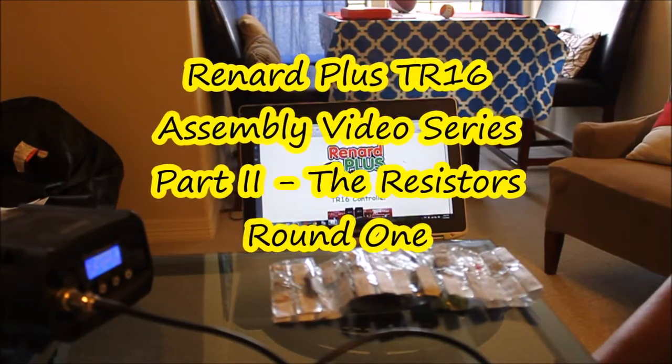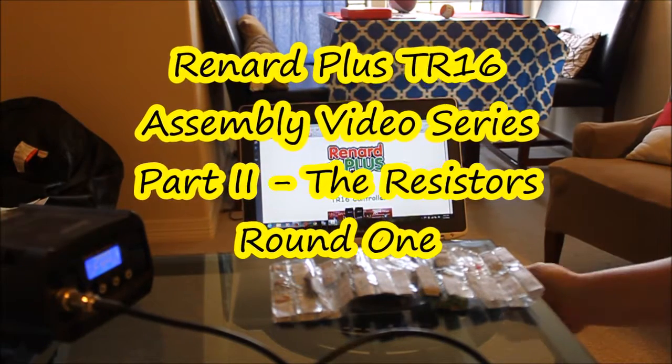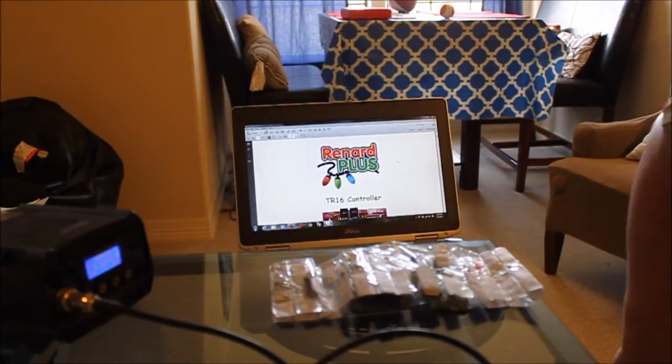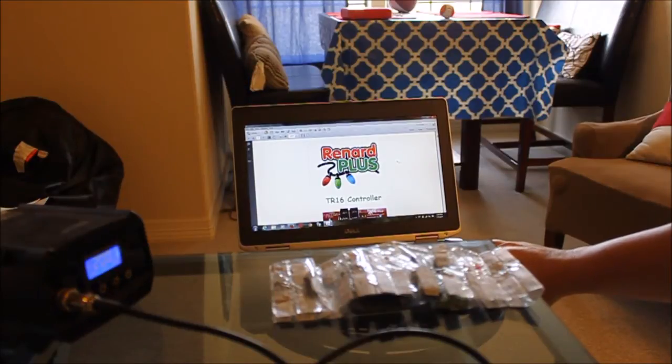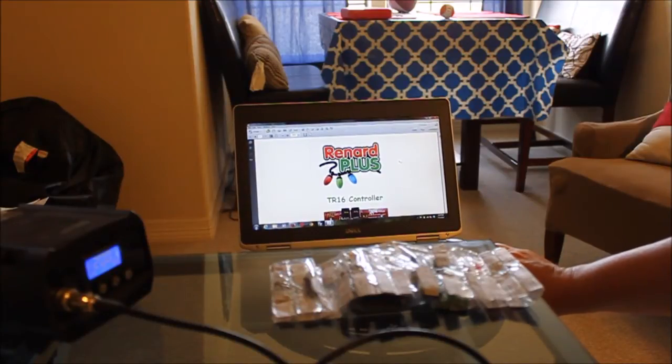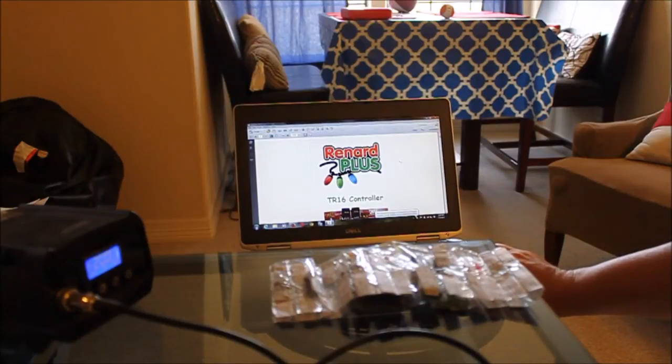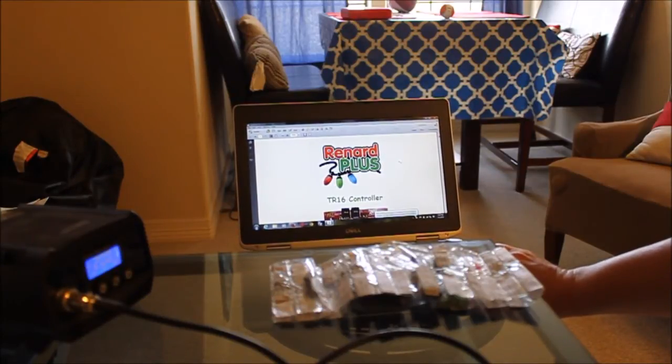I'm trying to get a little focus here. What I brought up is the PDF files for the Renard Plus instructions for the TR-16 controller. The instructions for this do not always match our kits in the order that they're assembled. The premise behind the order and the assembly is doing the shortest components first with the tallest components last.